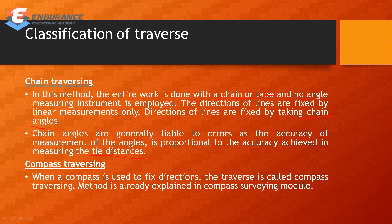The next classification is compass traversing. When a compass is used to fix directions, the traverse is called compass traversing. We need to measure all directions using the compass, which serves as the angular measuring instrument. The compass traversing unit uses the compass for all direction measurements.